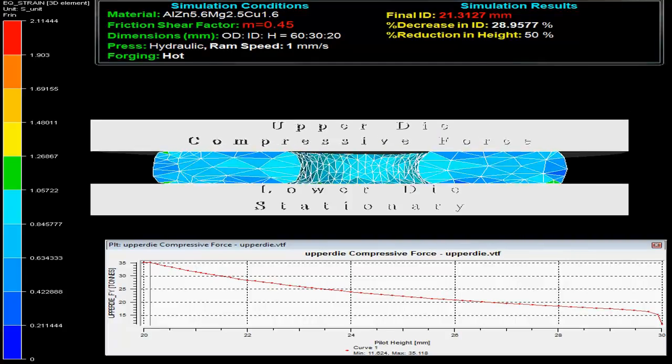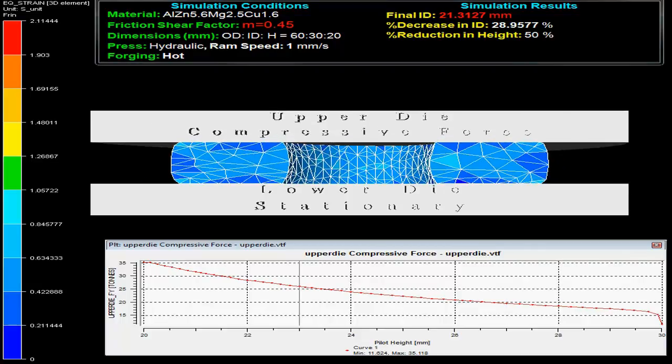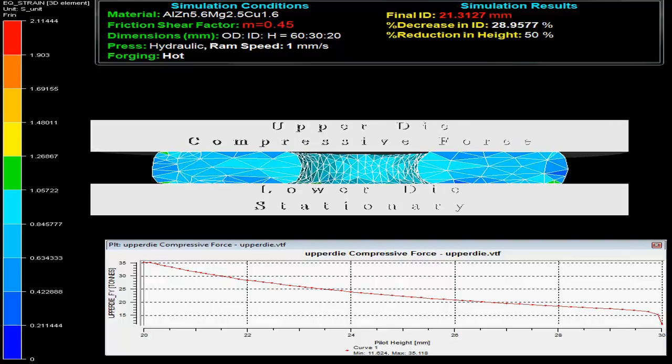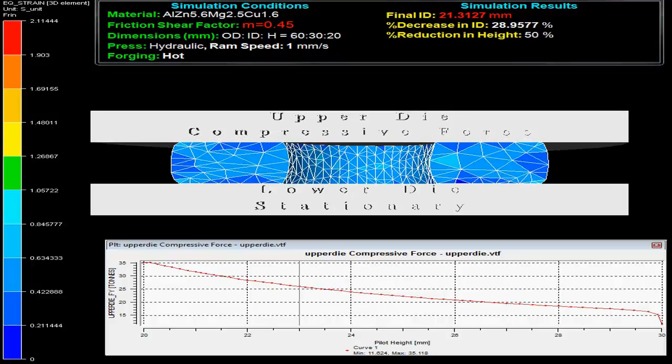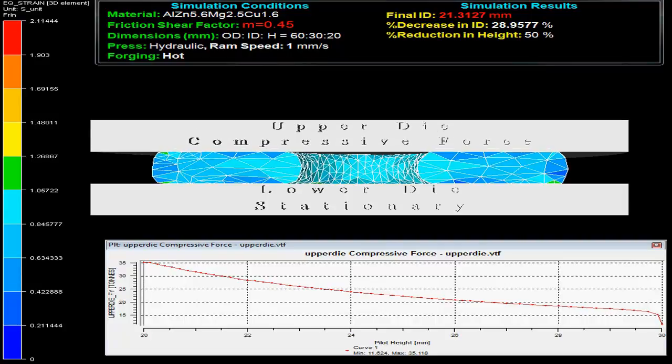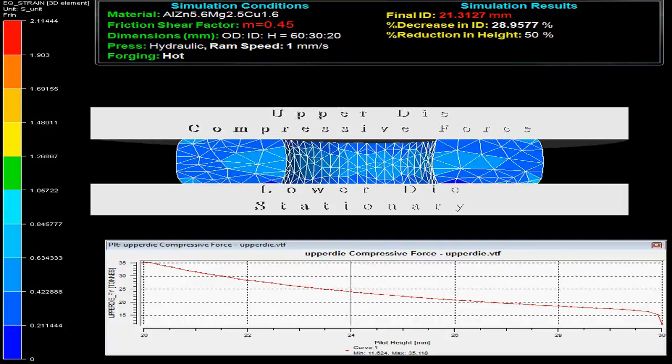On the left top corner in the video one can observe the simulation conditions. The specimen material is aluminum alloy with friction shear factor M as 0.45 and initial outer diameter to inner diameter to height ratio as 60:30:20.